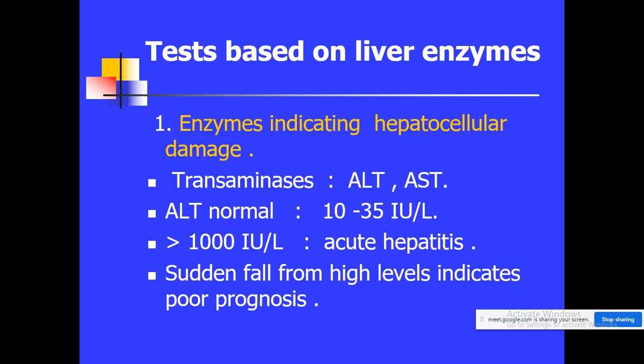Transaminases — we have two major transaminase enzymes: ALT, alanine transaminase, also called SGPT (serum glutamate pyruvate transaminase), and AST, aspartate transaminase, also called SGOT (serum glutamate oxaloacetate transaminase).